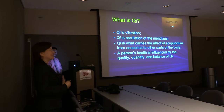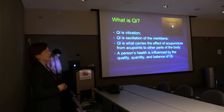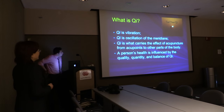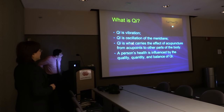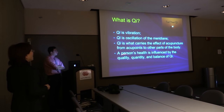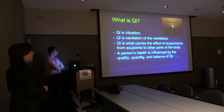Can we measure qi? According to research, qi is vibration. Qi is the alternation of the meridians. Qi is what carries the effect of acupuncture from one point to another part of the body. A person's health is influenced by the quantity and balance of qi.